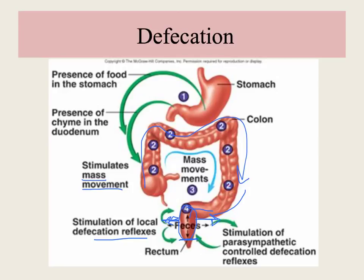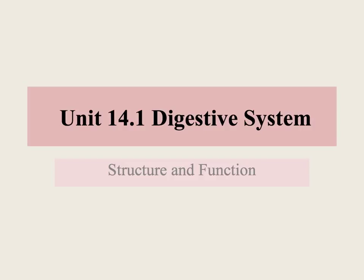Since defecation is under voluntary control, you can choose not to, and the pressure will go down — sometimes reverse peristalsis will back things up into the large intestine and absorption of water will continue. If feces are not eliminated, a person can become constipated, with feces becoming hard and difficult to move because they stayed in the large intestine too long. That covers the structure and function of the digestive system; the next video will cover the various nutrients you eat and how they are involved in your health.